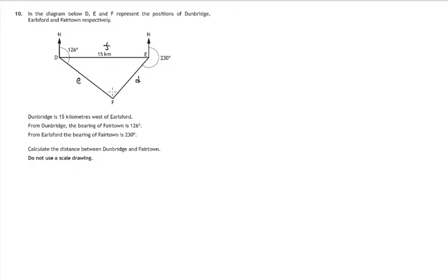So let's try and work out some of the angles in this triangle. We're told that Dunbridge is west of Erlsford, so this angle here must be right angled as is this angle. This bearing of 126 degrees, if we subtract 90, we'll get 36 degrees. So there's one of the angles of triangle DEF.